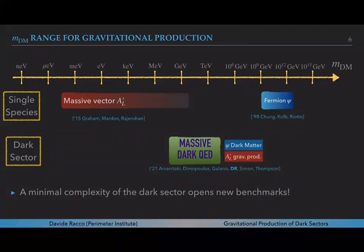In order to address this question we study in our project one of the simplest scenarios we could conceive: massive dark QED. We have one fermion ψ that is the dark matter and one vector A' whose longitudinal degree of freedom is gravitationally produced during inflation.